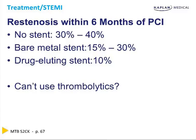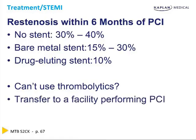If you can't use thrombolytics and the patient has arrived at a hospital with no angioplasty capability, and there's a contraindication to thrombolytics, this person must be transferred to a facility that does angioplasty. For example, if someone had a stroke six months ago, they can't use thrombolytics, so they need to be transferred for angioplasty.